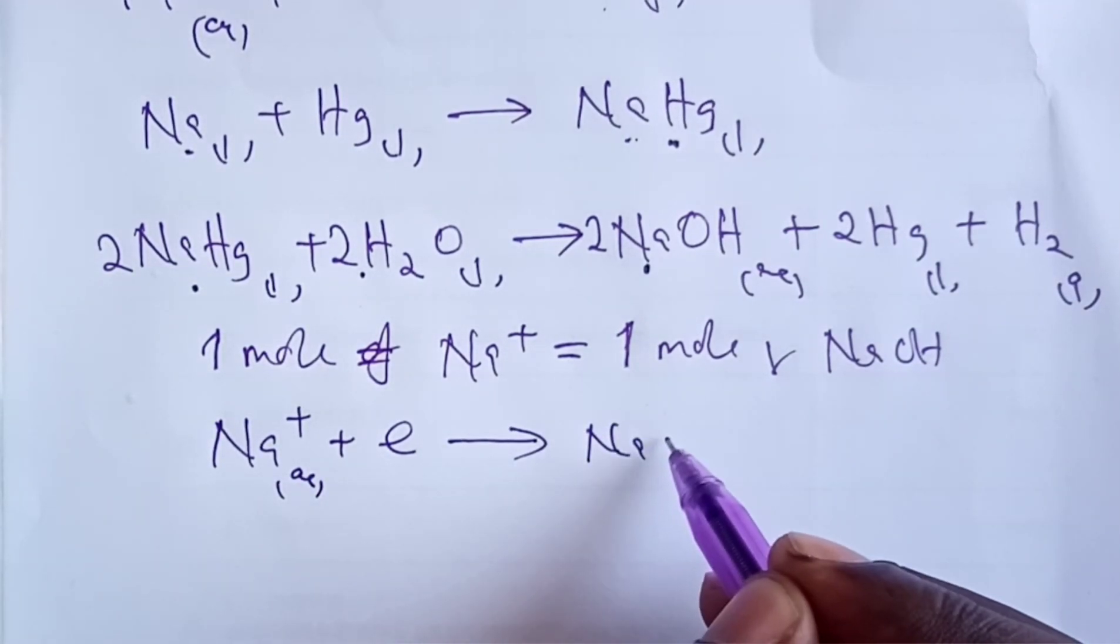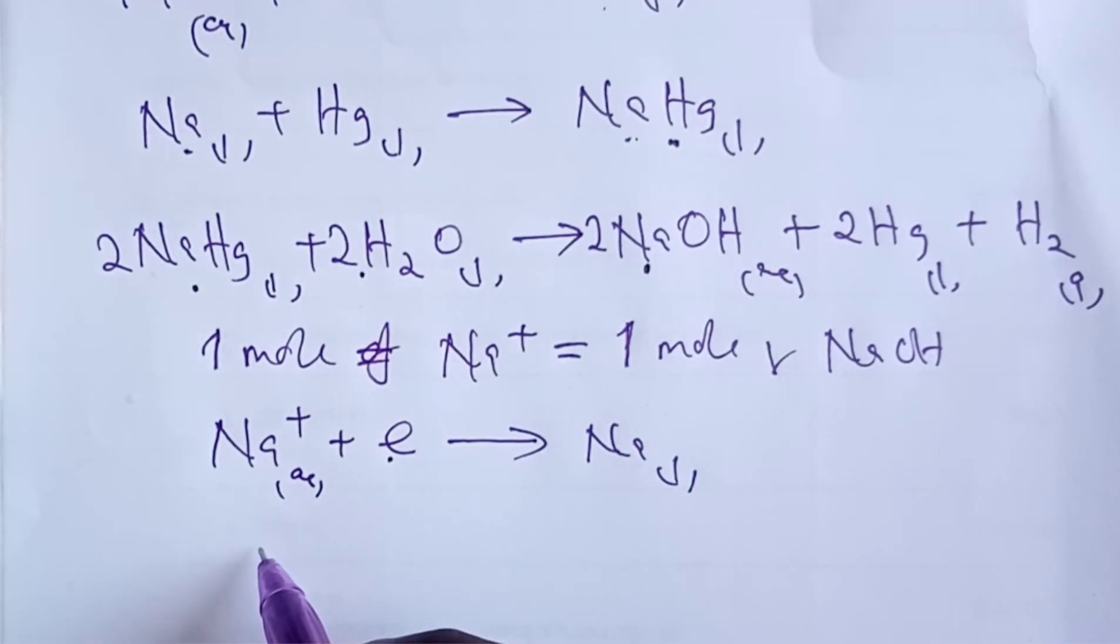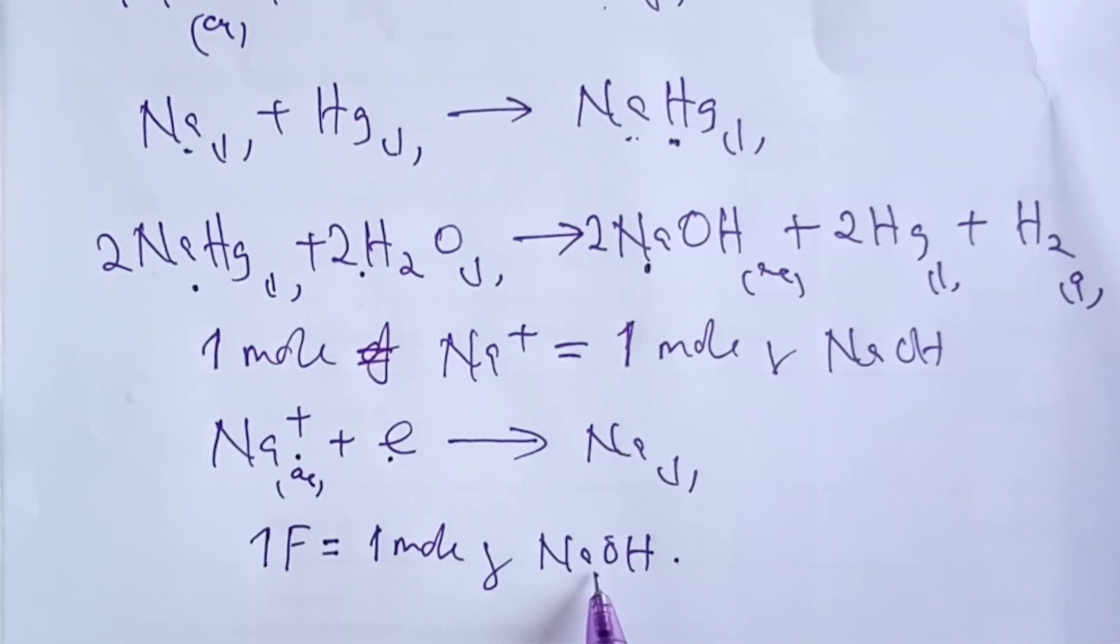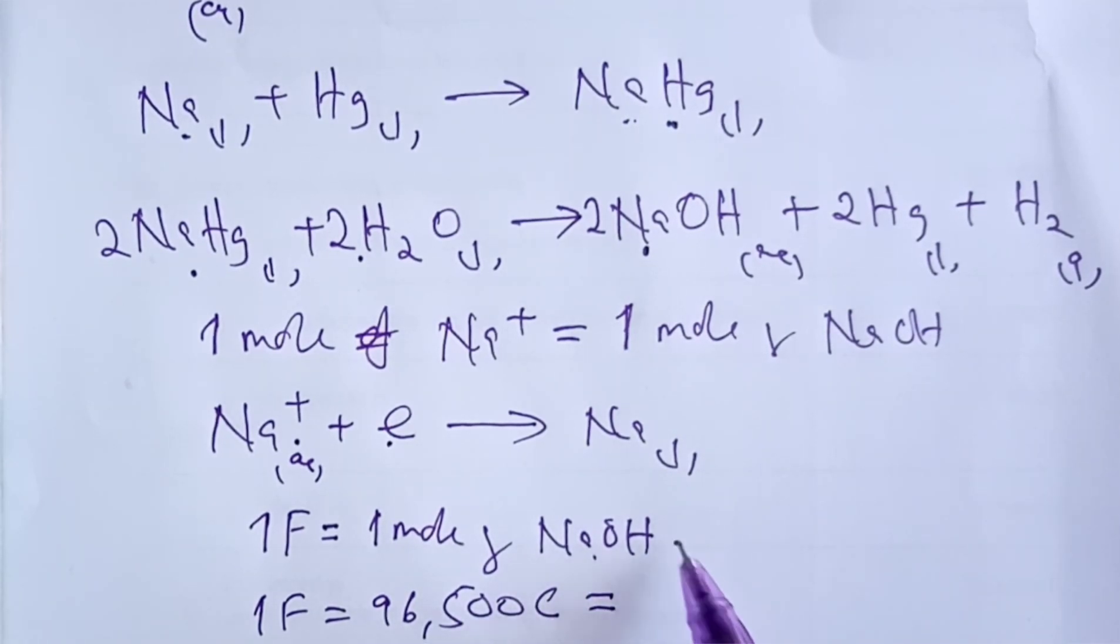Let us now proceed to relating the discharge of sodium ions to the quantity of electricity. Because I have one mole of electrons involved, I will have one faraday being used, and this will give me one mole of sodium hydroxide, because we've just said that one mole of sodium ions is able to give us one mole of sodium hydroxide.